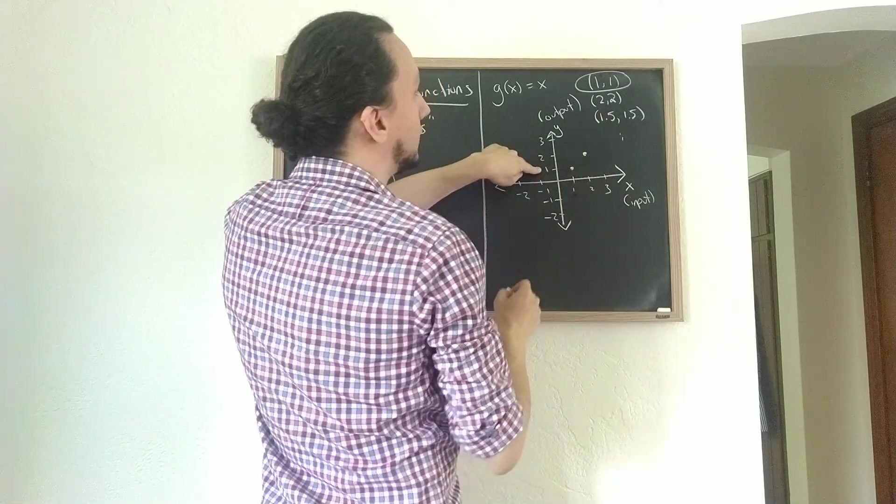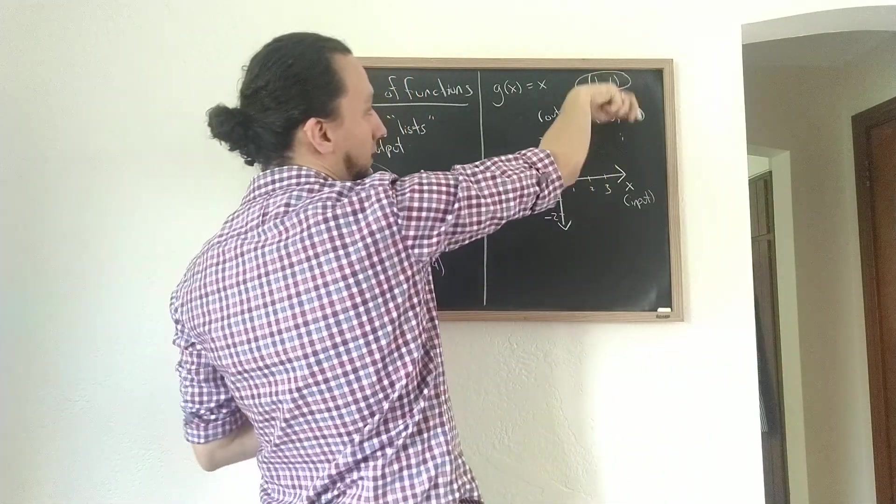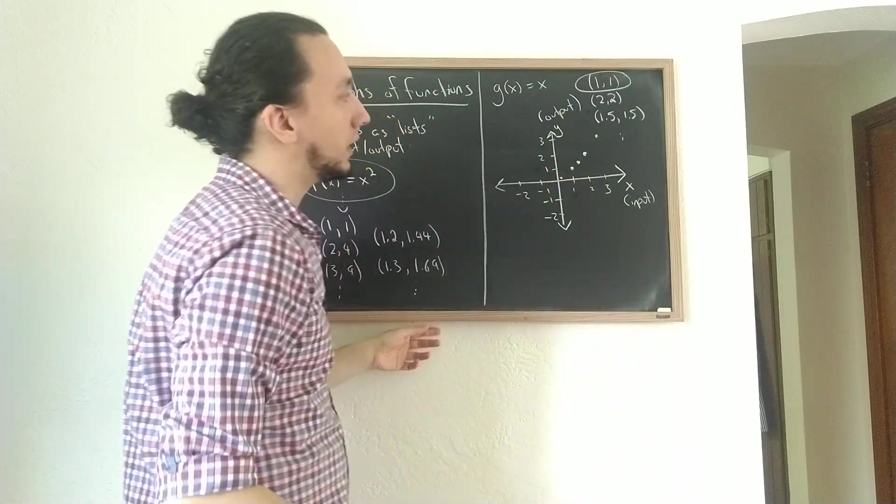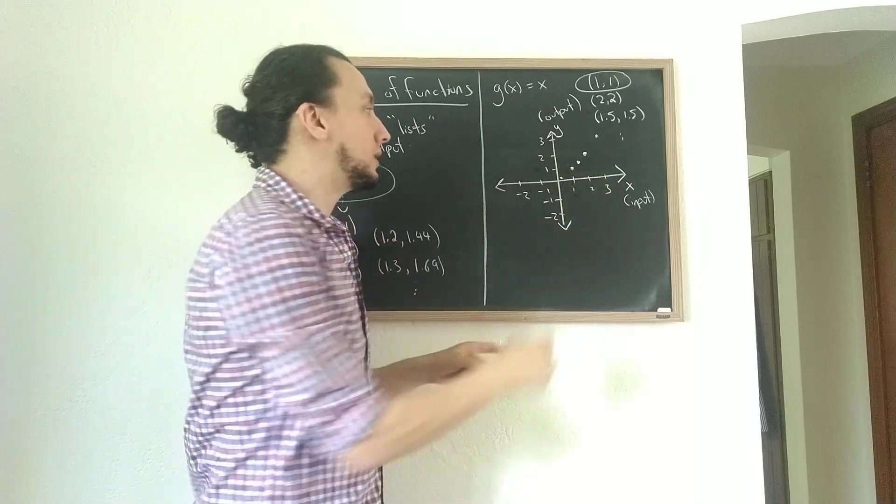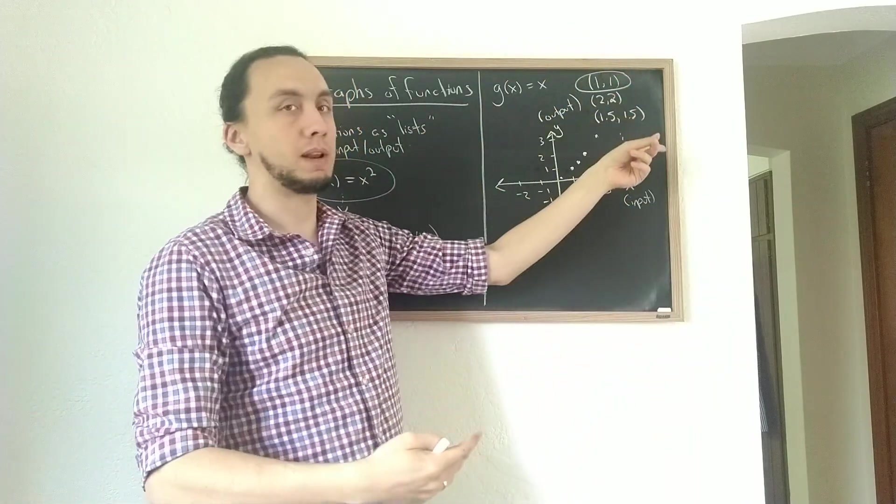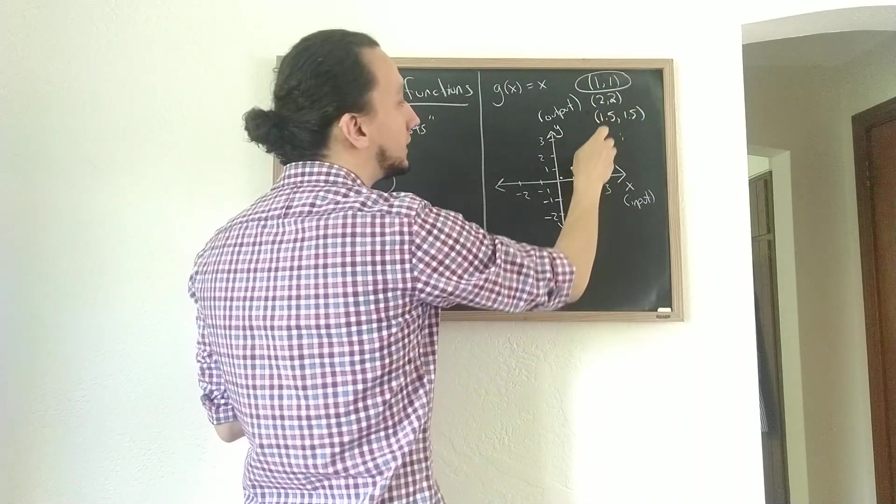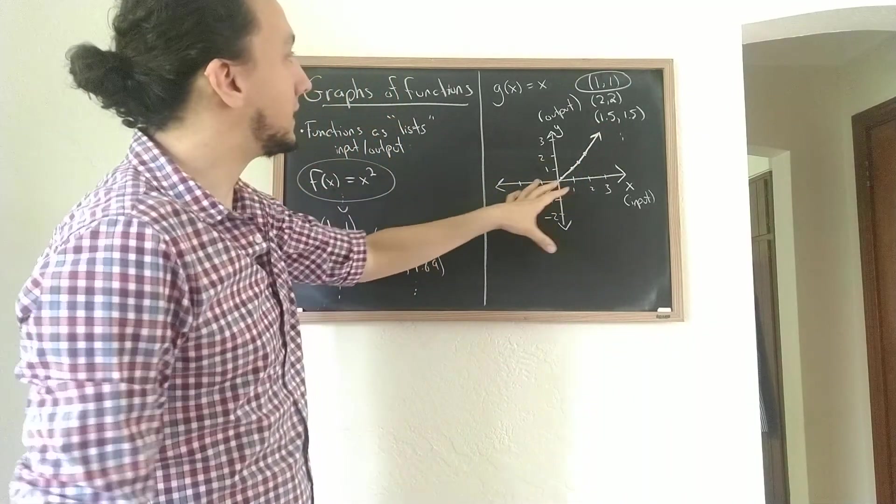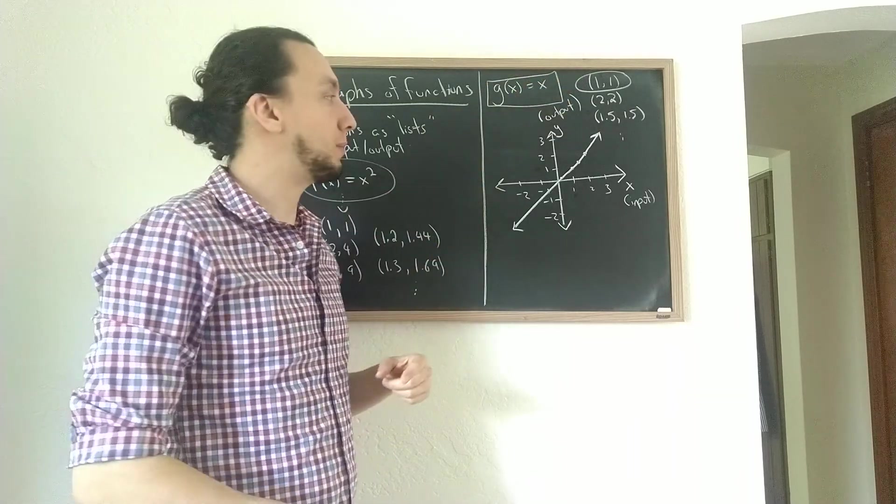This says an input of 2 produces an output of 2, and an input of 1.5 produces an output of 1.5. I also know, even though I didn't get to it in the list, an input of 3 produces an output of 3, and an input of 0.1 produces an output of 0.1. The point of this notation, this graph, is that I can actually, once I have the convention that points represent input-output pairs, I don't have to write down every one of the infinitely many pairs. I can just draw a single point in the plane for each pair that should exist, and what we see is we get this line which represents the function g of x equals x by representing all the possible input-output pairs.